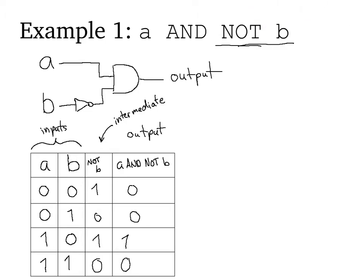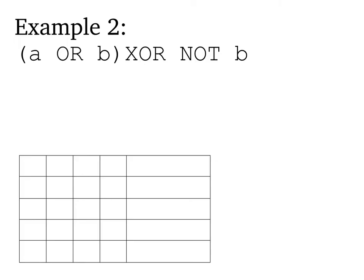Let's look at a slightly more complicated example. This one still has two inputs, A and B, but we've got another gate and another level of processing to look at here. So we've got A or B, exclusive or not B. And notice the use of parentheses here.